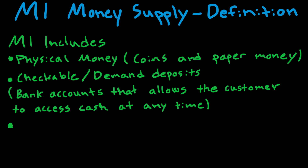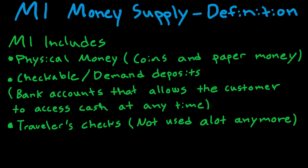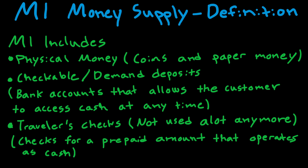There is one more type that is not used a lot anymore but is still included: traveler's checks. These are checks for a prepaid amount that operate in the same manner as cash, and were commonly used by travelers. Nowadays they are not widely used anymore. These three types are what M1 includes.